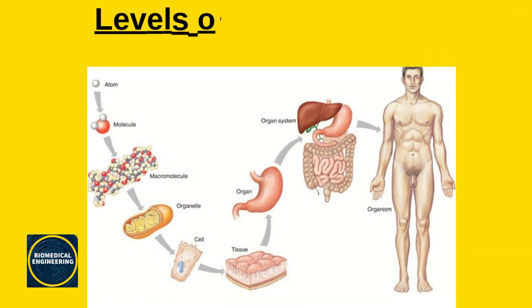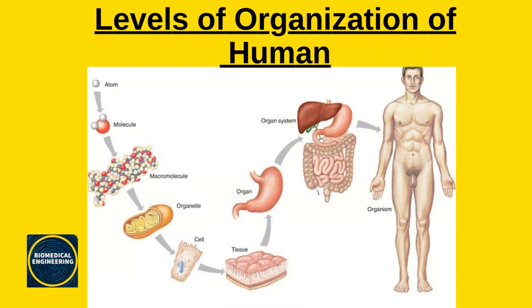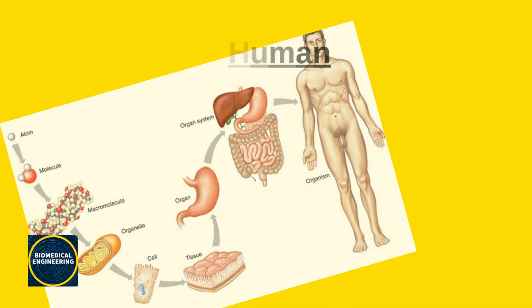The major levels of organization in the body, from the simplest to the most complex, are: atoms, molecules, organelles, cells, tissues, organs, organ systems, and the human organism.